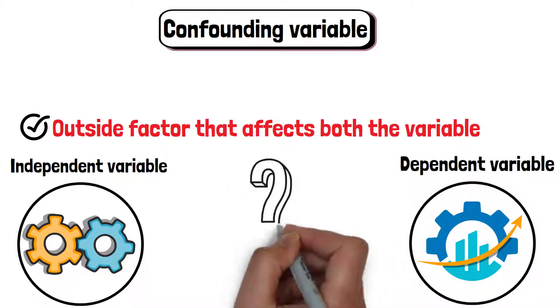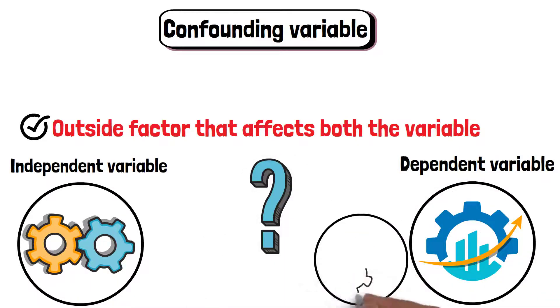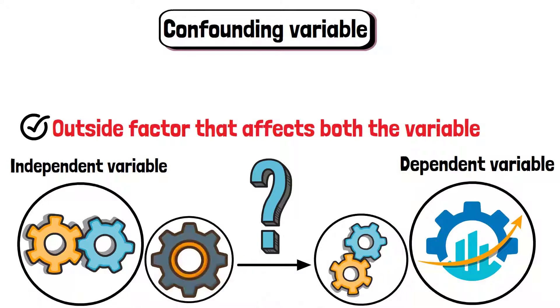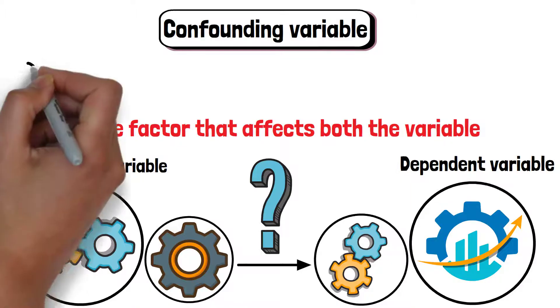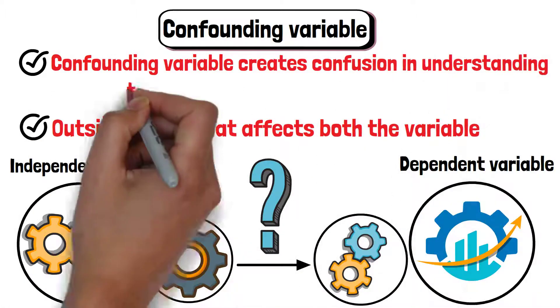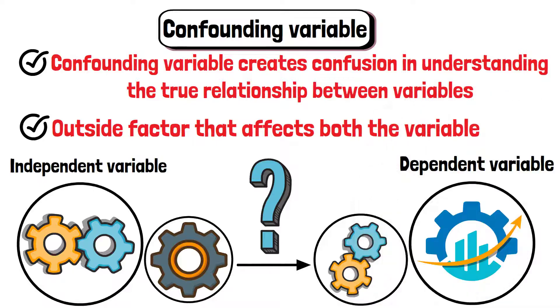This outside factor can make it hard to determine if the changes in the dependent variable are truly caused by the independent variable or by something else. A confounding variable creates confusion in understanding the true relationship between variables.